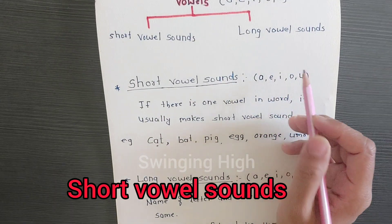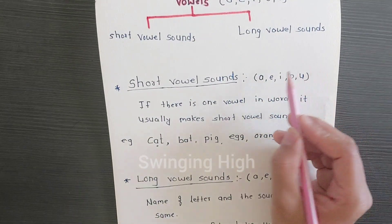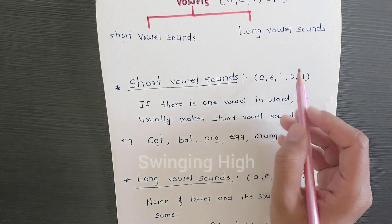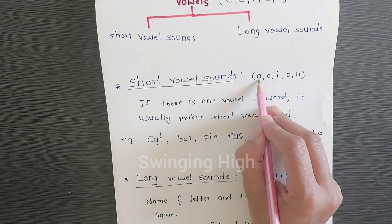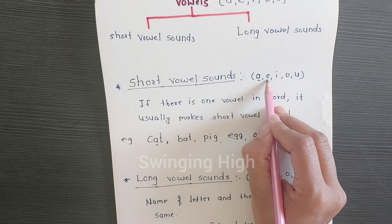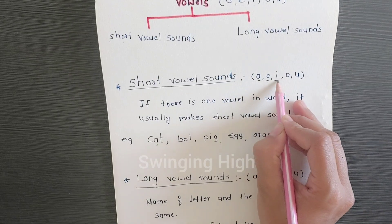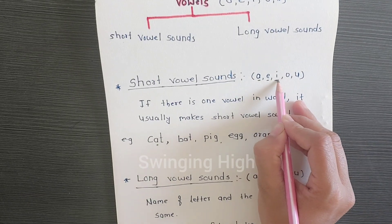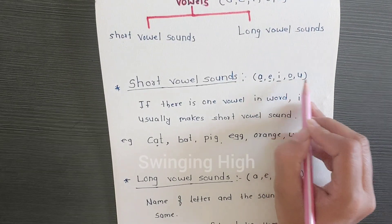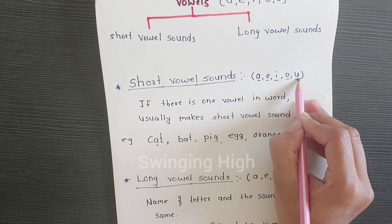The vowels are the same in short vowel sounds and long vowel sounds: A, E, I, O, U. One difference is there: in short vowels, A says 'a', E says 'e', I says 'i', O says 'o', U says 'u'.